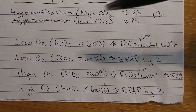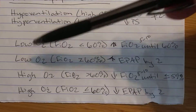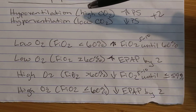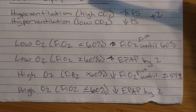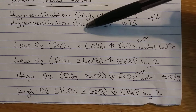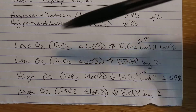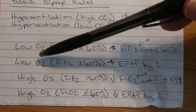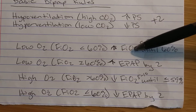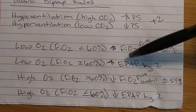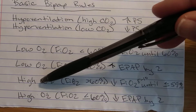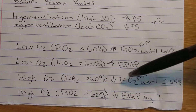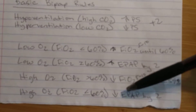So the easiest way to remember it: if my CO2 is high, I'm increasing pressure support; if my CO2 is low, I'm decreasing pressure support. If my O2 is low, I'm going to be increasing either FiO2 or EPAP. If my O2 is high, I'm going to decrease either FiO2 or EPAP.